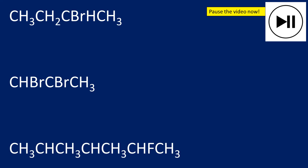For the last task, we have some structural formulas to convert into skeletal formulas. If it helps to draw the displayed formula first, then do that. For the first one: four carbons in the chain — one, two, three, four — with a Br group on the third carbon. For the second one: three carbons — one, two, three — and on the first carbon there's an H and a Br, so I draw the Br.